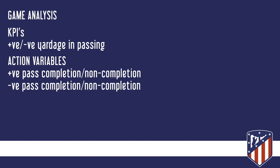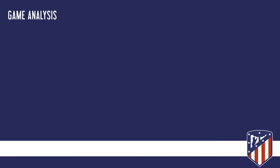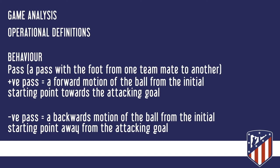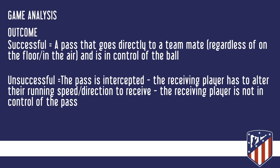In the game analysis, we need operational definitions. A pass is with one foot from one teammate to another. A positive pass is a forward motion of the ball from the initial starting point towards the attacking goal, and a negative pass is backwards motion away from the attacking goal. A successful outcome is a pass that goes directly to a teammate — it doesn't matter if it's on the floor or in the air, as long as the teammate is in control when receiving. An unsuccessful pass is when it's intercepted, the receiving player has to alter their running speed or direction, or they're not in control.